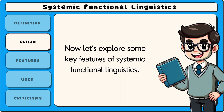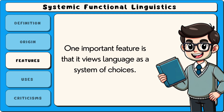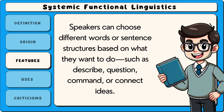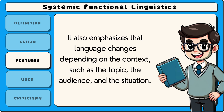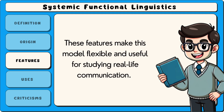Now let's explore some key features of systemic functional linguistics. One important feature is that it views language as a system of choices. Speakers can choose different words or sentence structures based on what they want to do, such as describe, question, command or connect ideas. Another feature is its focus on three main functions of language: the ideational — sharing information; the interpersonal — building relationships; and the textual — organising the message clearly. It also emphasises that language changes depending on the context, such as the topic, the audience, and the situation. These features make this model flexible and useful for studying real-life communication.